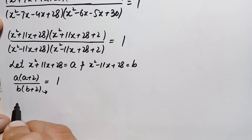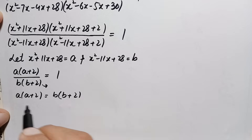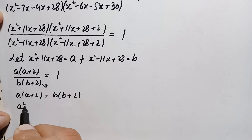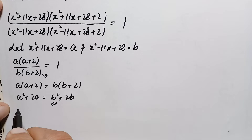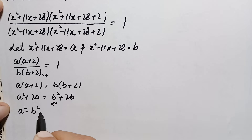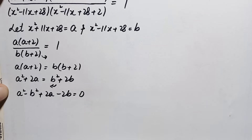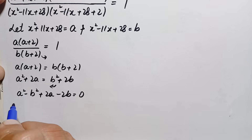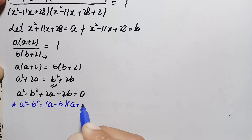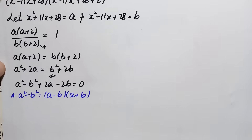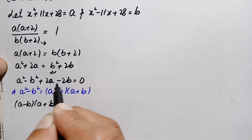Taking the right-hand side expression over, this becomes a(a+2) = b(b+2). Expanding both sides: a² + 2a = b² + 2b. Rearranging: a² - b² + 2a - 2b = 0. We apply the algebraic identity a² - b² = (a-b)(a+b), so the left hand side becomes (a-b)(a+b).